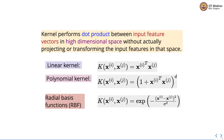The kernel basically performs the dot product between input feature vectors in high dimensional space without actually projecting or transforming the input features into that space, which is a big deal because we are saving the time required for transformation and then calculation in the transform feature space. What we do is calculate the dot product in the original feature space and then apply a mathematical function to get the dot product in the higher dimensional space.